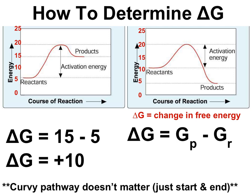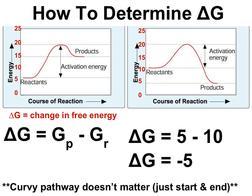In the graph on the right, the energy level of the products is 5 and the energy level of the reactants is 10, so delta G = 5 − 10 = negative 5. This means 5 joules of energy were released in the reaction when the reactants went to lower-energy products. The energy difference is the energy that was released — this reaction is exergonic.